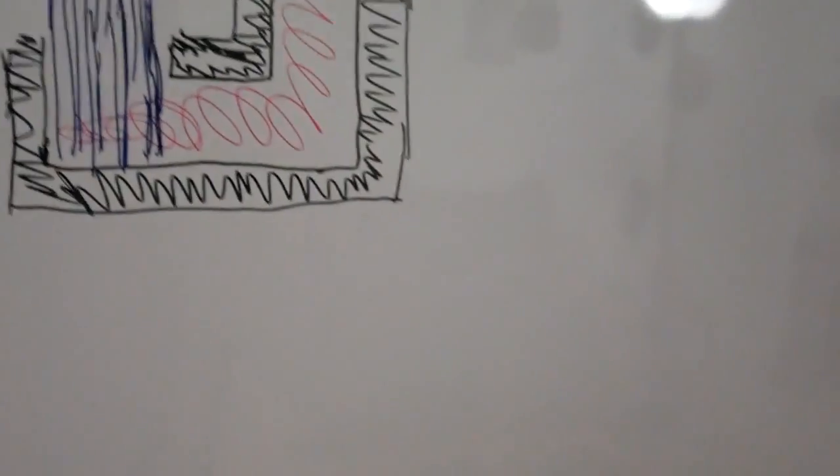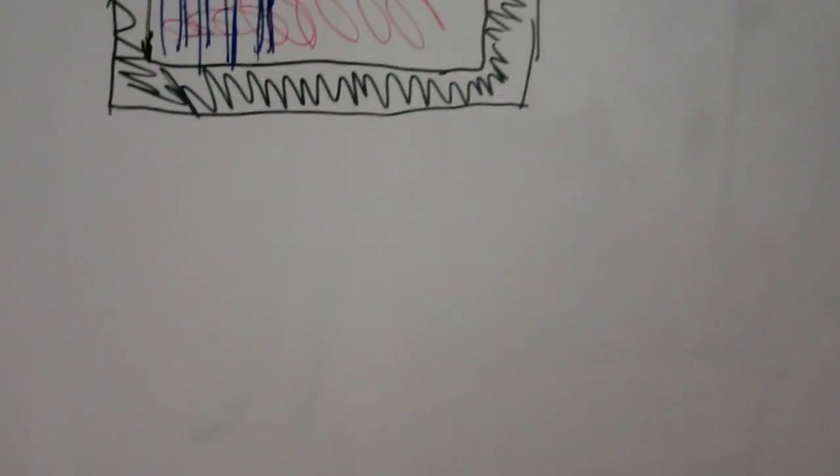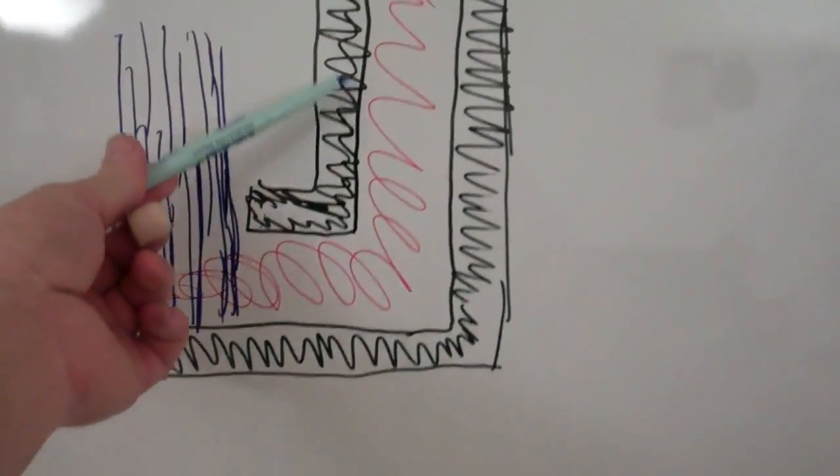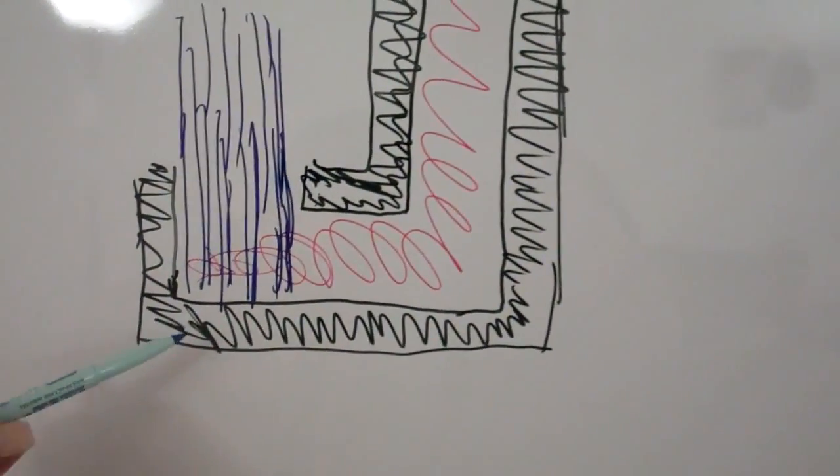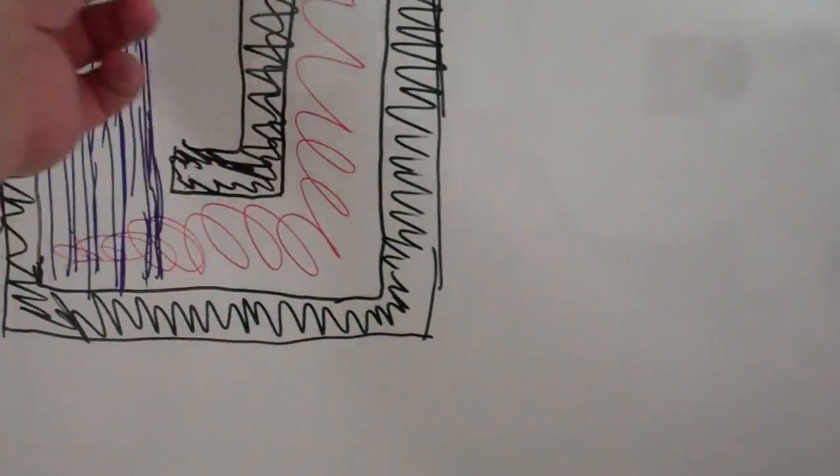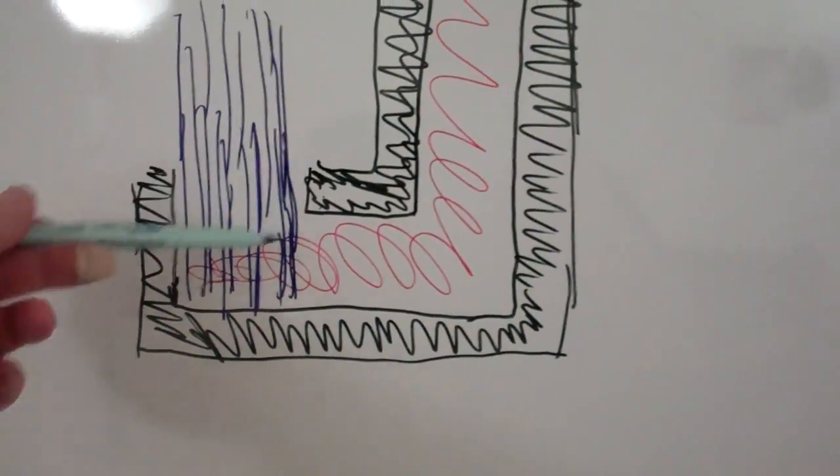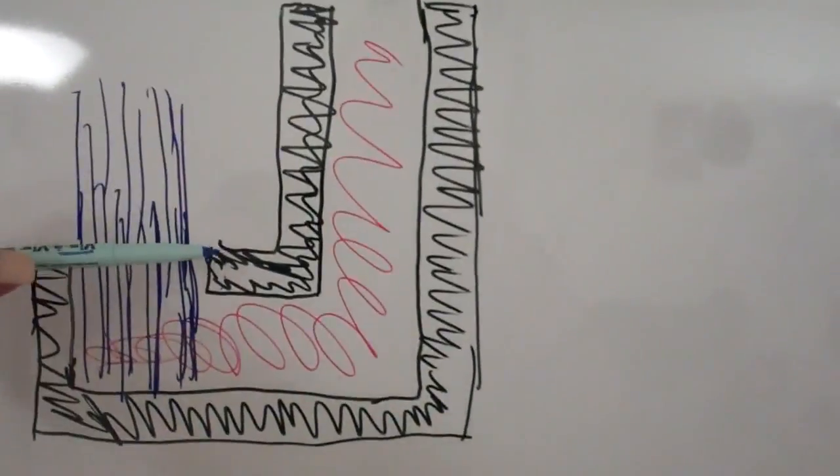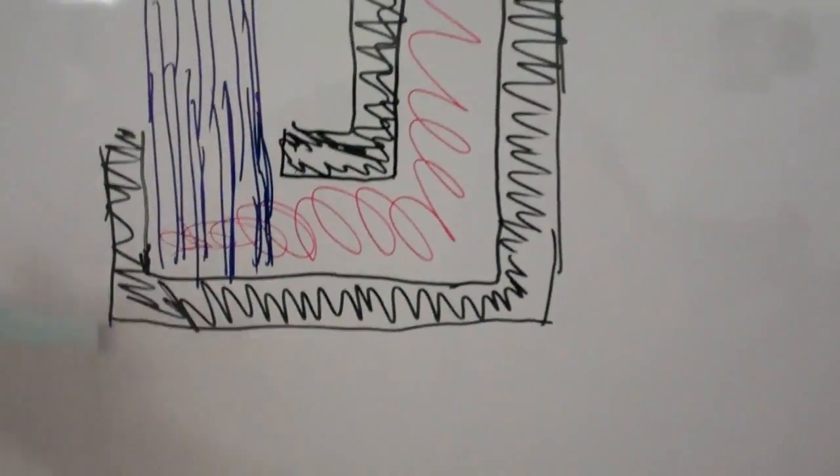To recap what we've got is we've got an insulated j-tube, probably surrounded by vermiculite or some other kind of insulating material. Generally it's made of fire brick and on the outside of the fire brick you've got some kind of insulation.